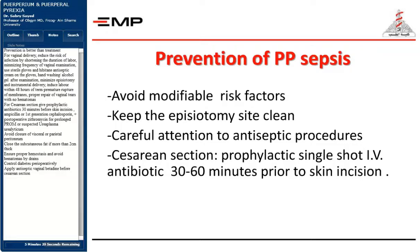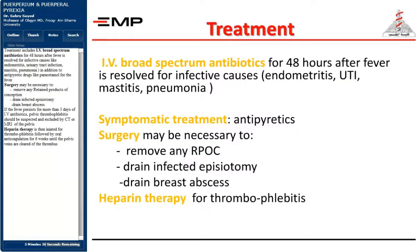Treatment includes IV broad-spectrum antibiotics for 48 hours after fever is resolved for infective causes like endometritis, urinary tract infection, mastitis, and pneumonia, in addition to antipyretic drugs like paracetamol. Surgery may be necessary to remove any retained products of conception, drain infected episiotomy, or drain breast abscess. If the fever persists for more than 3 days of IV antibiotics, septic pelvic thrombophlebitis should be suspected and excluded by CT or MRI of the pelvis. Heparin therapy is then initiated for thrombophlebitis, followed by oral anticoagulation for 6 weeks until the pelvic veins are cleared of the thrombus.